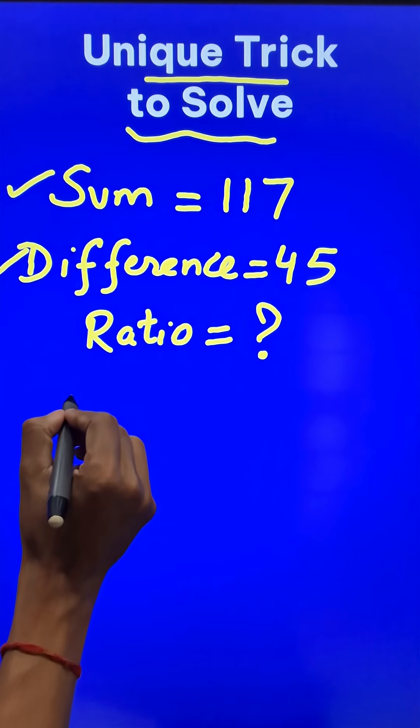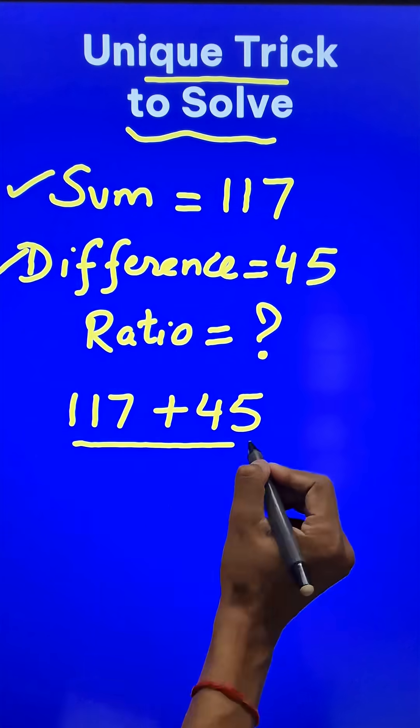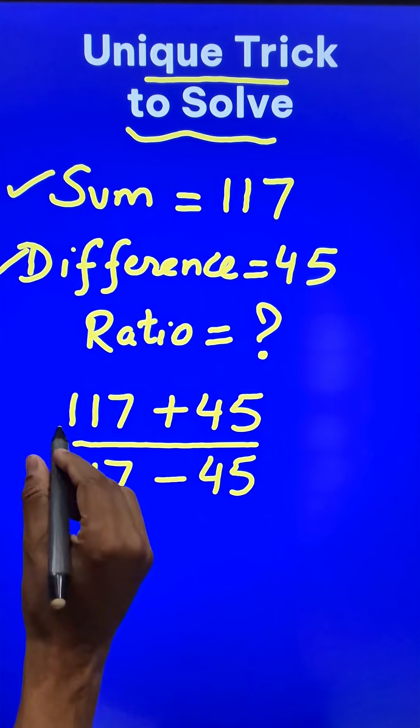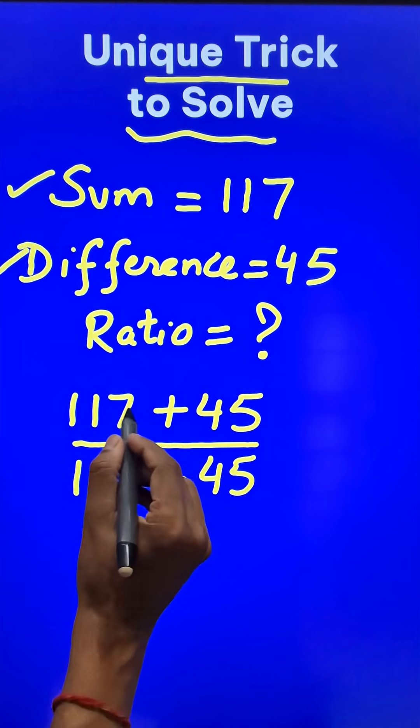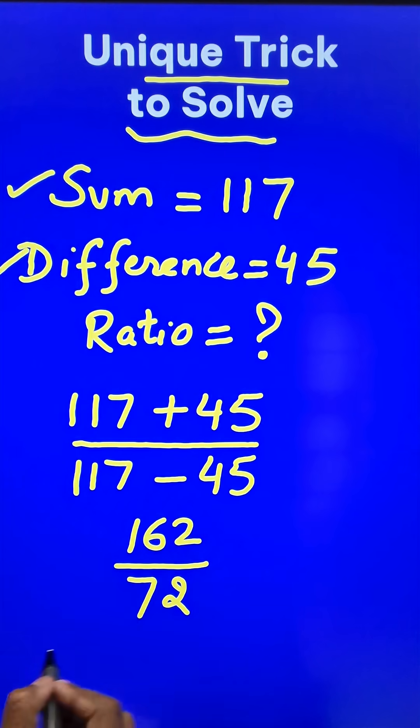You just take the sum, add it to the difference and in the denominator take the sum and subtract the difference from this. Now what do you get here is 162 and in the denominator you will get 72.